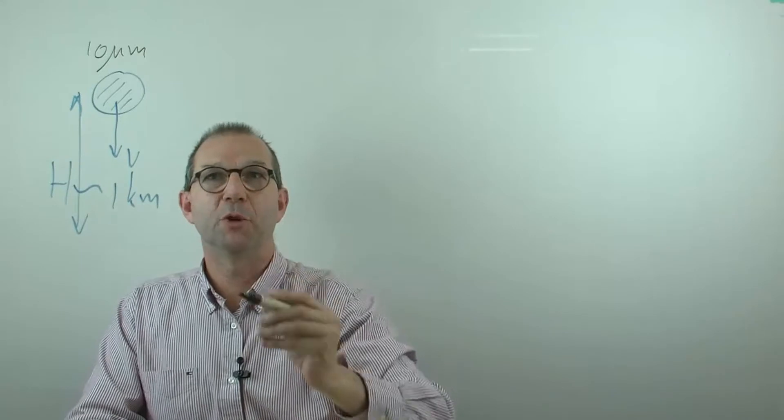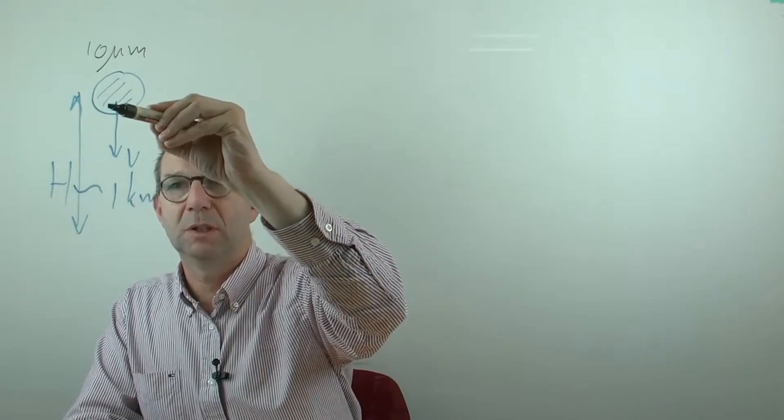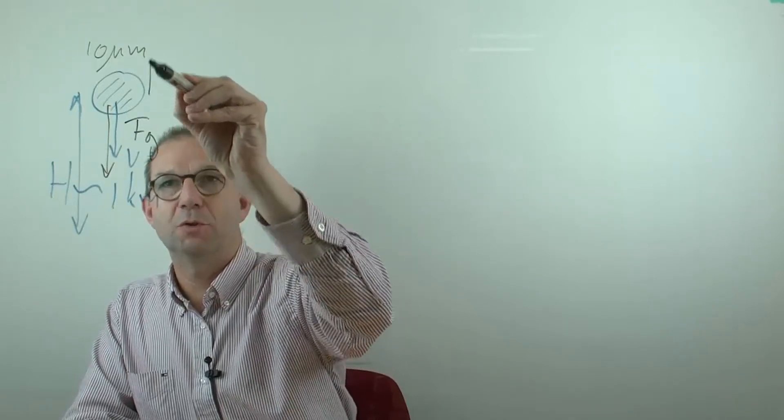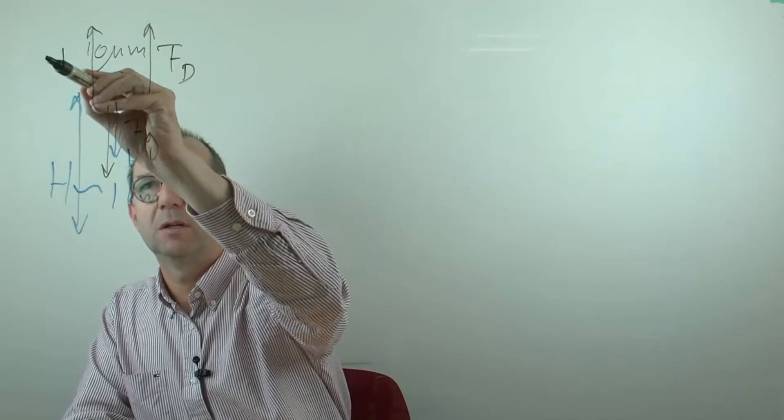To find the terminal velocity, as usual, we equate the sum of forces to zero. Force one: gravity. Force two: drag. Force three: buoyancy.